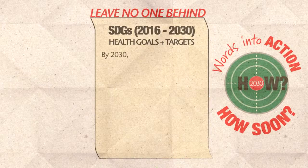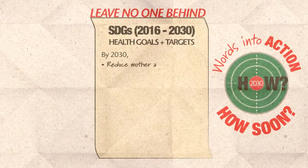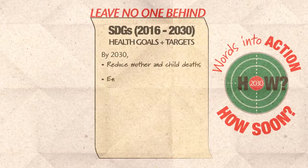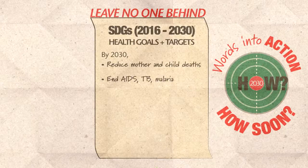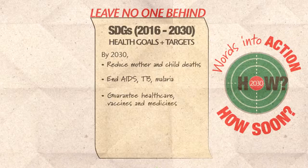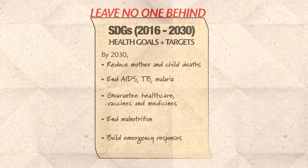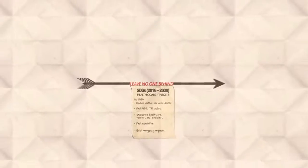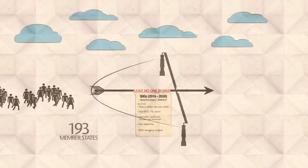Health targets by 2030: reduce mother and child deaths, end epidemics such as HIV-AIDS, tuberculosis and malaria, guarantee broader access to healthcare, vaccines and medicines, end malnutrition, improve emergency responses. These big targets predict a happy ending in 15 years.